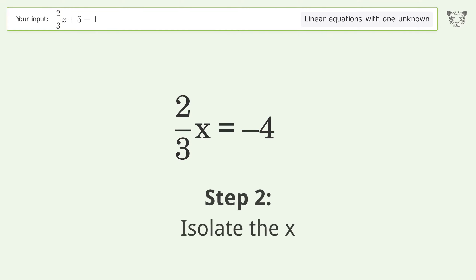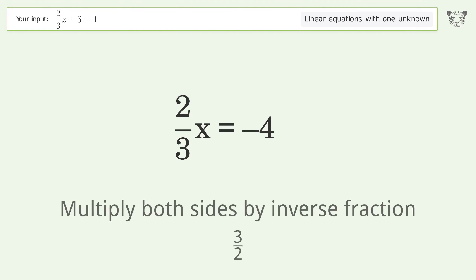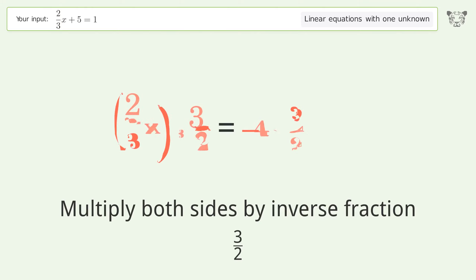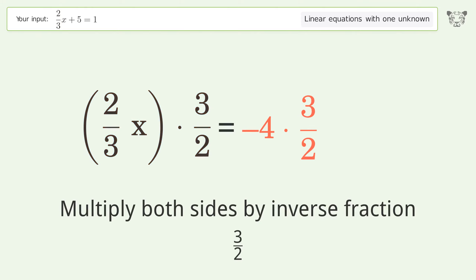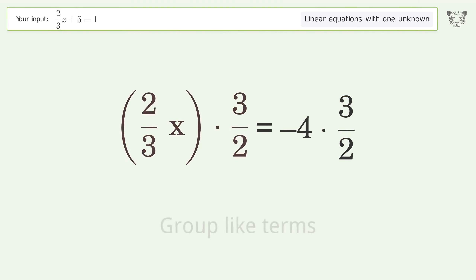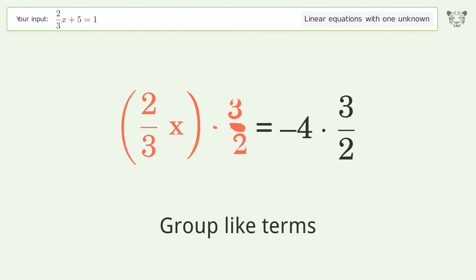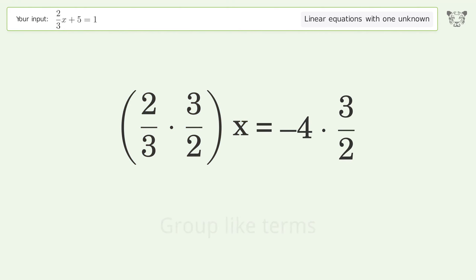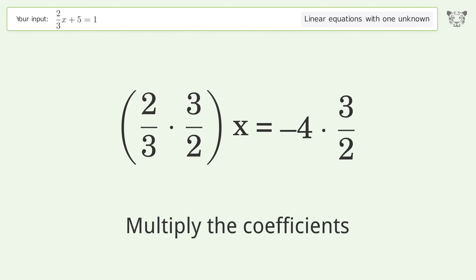Isolate x by multiplying both sides by the inverse fraction 3 over 2. Group like terms, then multiply the coefficients.